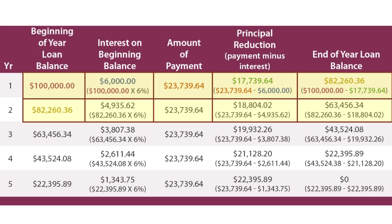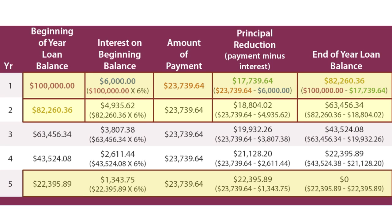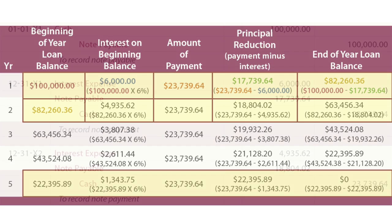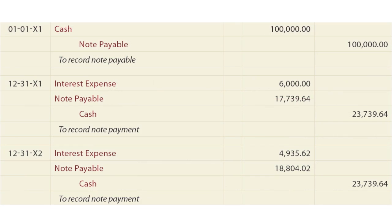And so it would go for each of the next years. Notice that the last payment in the final year satisfies the interest of $1,343 and a principal reduction of $22,395, leaving a zero balance due at maturity. So it's pretty nifty mathematics here.